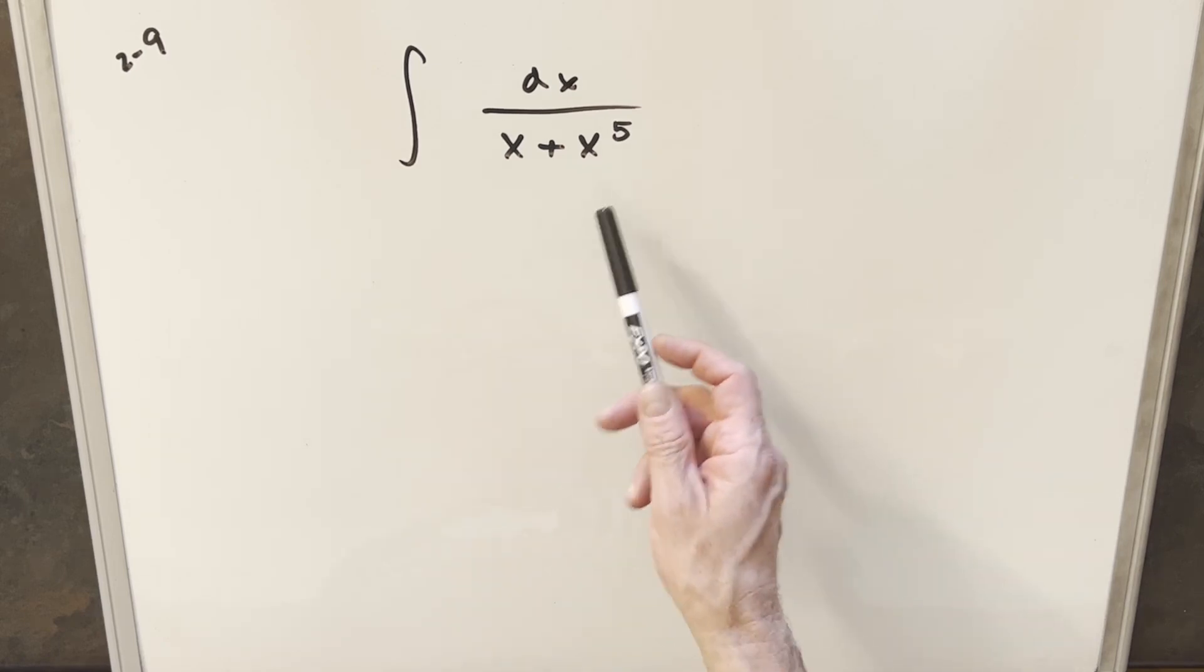One interesting thing to note here is this problem is actually really similar to an earlier problem we had in the same integration bee. I think it was round two, problem two, where they had an e in the exponent. So we're just going to do something very similar.